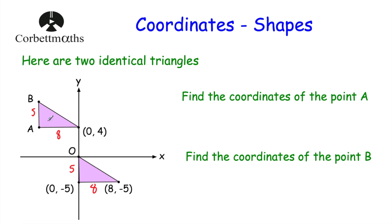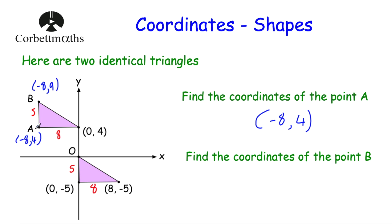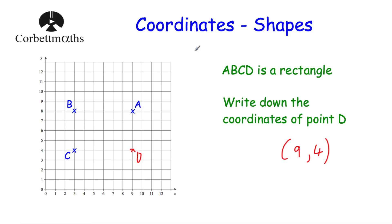We can now use this information to find the coordinates of point A and point B. If the bottom right-hand corner of the triangle is 0, 4 and we're going 8 across, we go to negative 8, 4. So the coordinates of this point here would be negative 8, 4. To find point B, from A at negative 8, 4 we go up another 5, giving us negative 8, 9. So the coordinates of point B would be negative 8, 9. In this video we've looked at coordinates and how to answer questions involving shapes on grids. I really hope you found this video useful — please like it and subscribe to the YouTube channel. Thank you, bye!